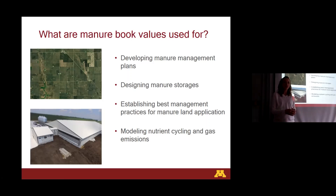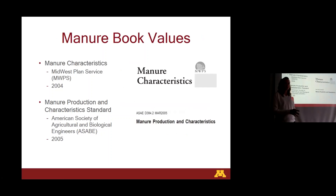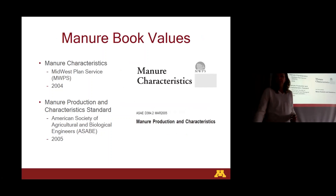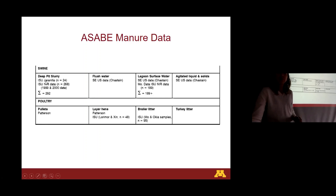They can also be used for modeling nutrient cycling and gas emissions. A couple of the common sources for our book values are manure characteristics put out by the Midwest Plan Service, published in 2004, and also manure production and characteristics standards put out by ASABE back in 2005. So as you can see, those are coming on 20 years old. And just as an example, this ASABE data for the swine numbers — for deep pit slurry, they had 24 samples from one set and another 268 from 1999 and 2000. Some of these others don't even have dates on them, so you'd have to dig in a little deeper to see how far back they go.